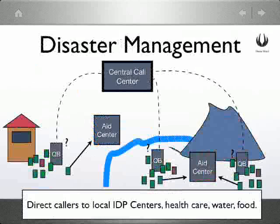Disaster management is helped by having a central call center and putting the question boxes in the field of an affected population. The central call center can direct callers to the right places, as well as health care, water, and food resources.